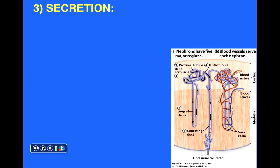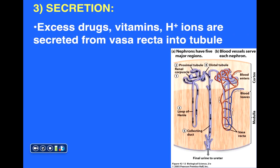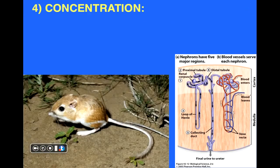The next process is secretion — essentially reabsorption in reverse. If we have excess drugs, vitamins, and protons (regulating pH), these can be secreted from the vasa recta directly into the tubule. This occurs in both the proximal and distal tubule, but most of this process occurs in the distal tubule.